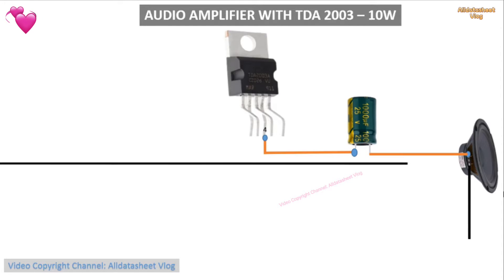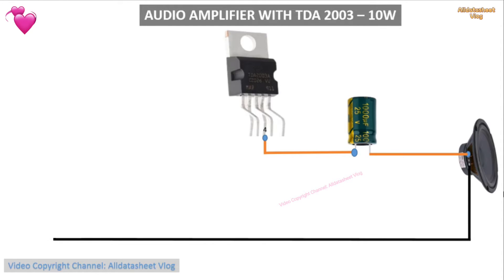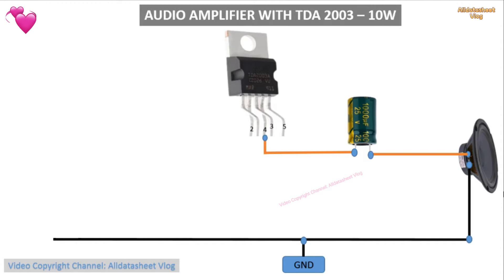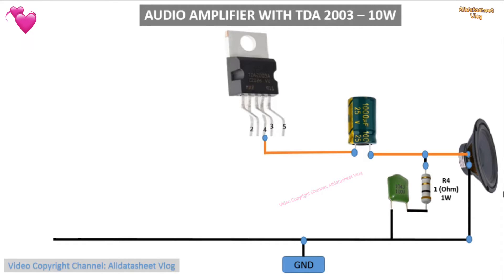This TDA 2003 connection diagram is also equivalent to TDA 2002. According to the manufacturer, TDA 2002 is 8 watt and TDA 2003 is 10 watt — the connections, component values, and voltages are all the same.